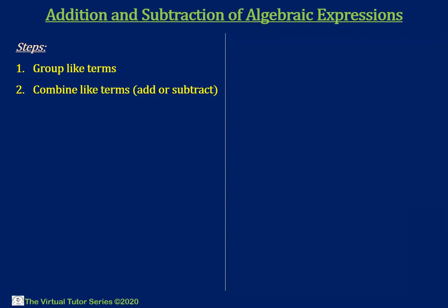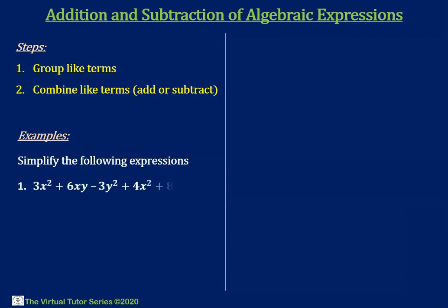Now let's consider the following examples. Simplify the following expressions. Number 1: 3x squared plus 6xy minus 3y squared plus 4x squared plus 8xy plus 2y squared.